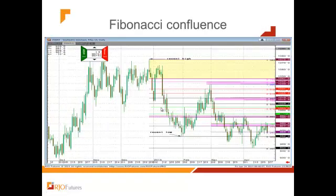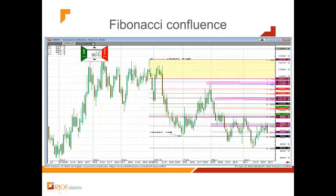Looking at a shorter-term example — this is soybeans. You can see the confluence: you draw a chart from here to here, from here to there, from there to here, to see where these sequences layer on top of each other. You get a feel for the cluster or confluence of these retracement levels, to see where the major resistance and major supports are on the chart. This is the soybean May contract.